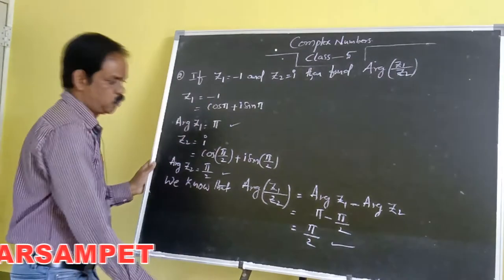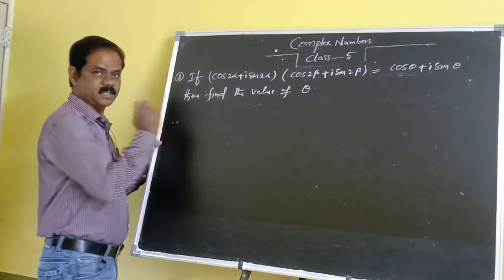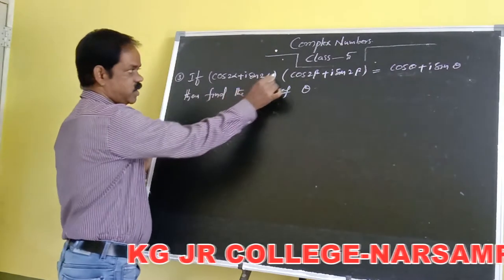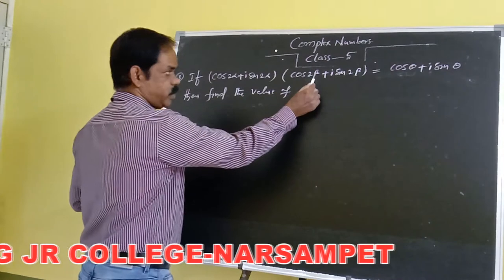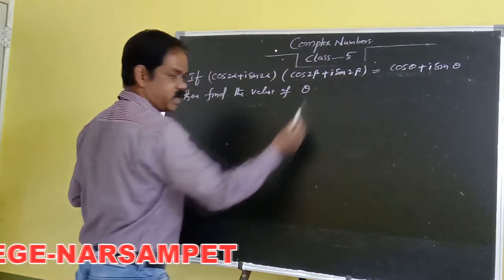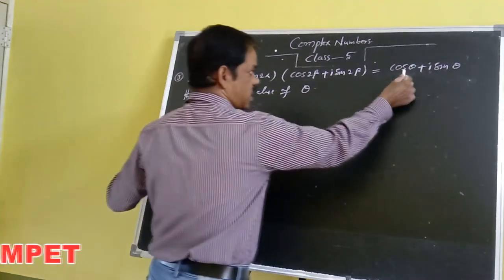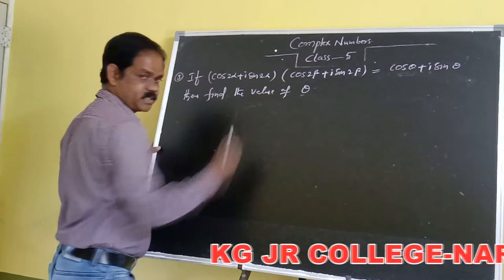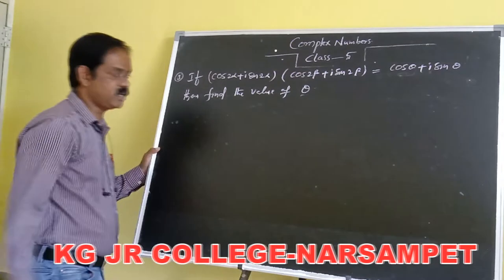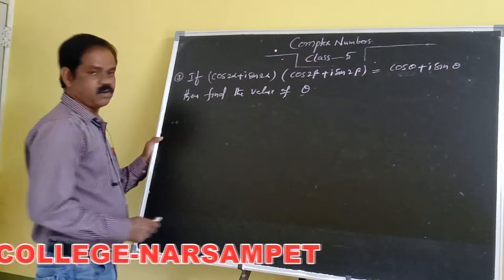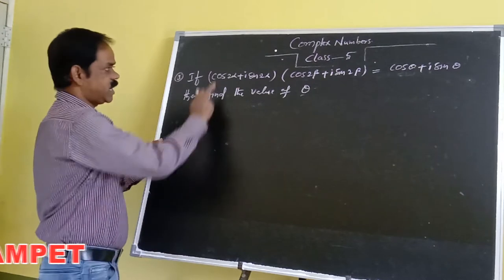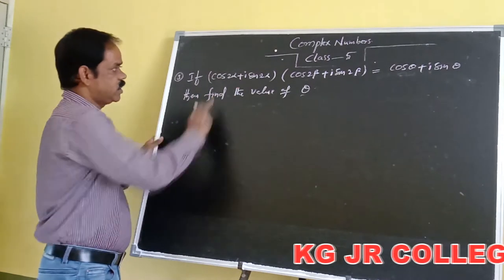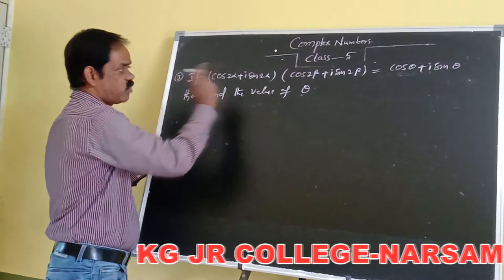Third problem: if cos 2 alpha plus i sin 2 alpha into cos 2 beta plus i sin 2 beta equals cos theta plus i sin theta, find the value of theta. Observe the LHS. The short form of cos 2 alpha plus i sin 2 alpha is Cis 2 alpha.